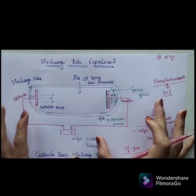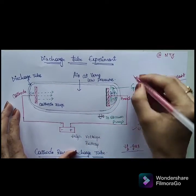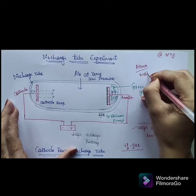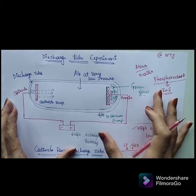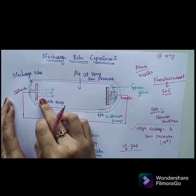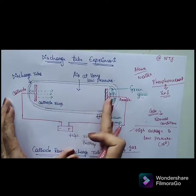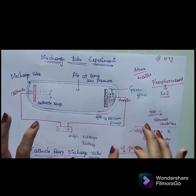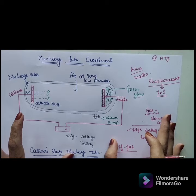The conclusion from this discharge tube experiment is that electrons are the basic constituents of atoms as well as matter. We can also conclude that matter consists of electrons, which are subatomic particles. From this experiment, we are concluding that electrons are generated. This is all about the discharge tube experiment — hope you all have understood clearly.